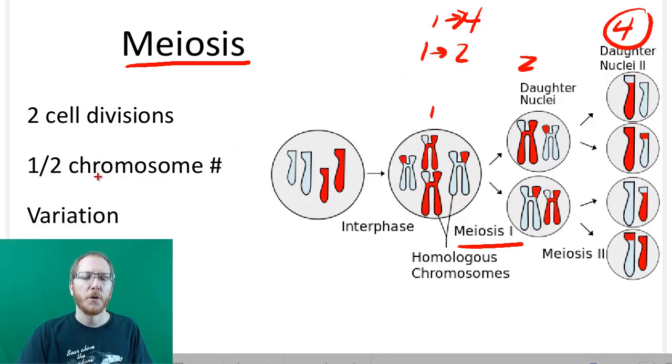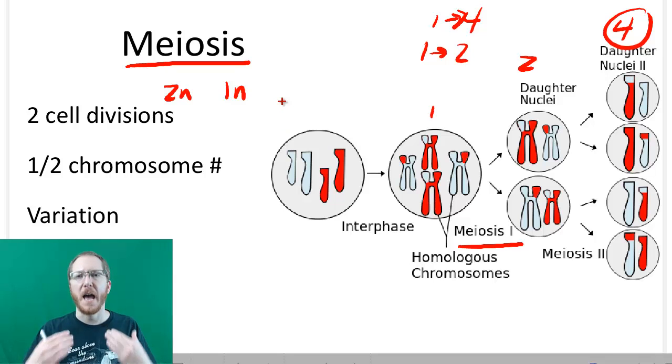Now we're also going to go through and take a cell that was 2N and we're going to make that become ultimately a 1N cell or a haploid cell. So the process of meiosis will always start off diploid and it will always finish off haploid. So each of these four cells will just be 1N. So half the chromosome number is the significant idea we want.